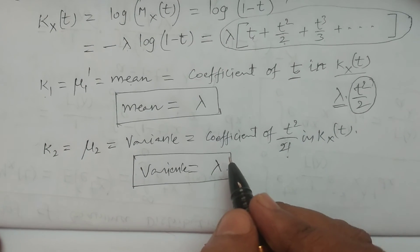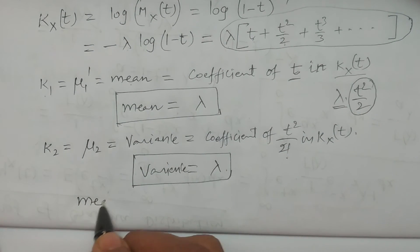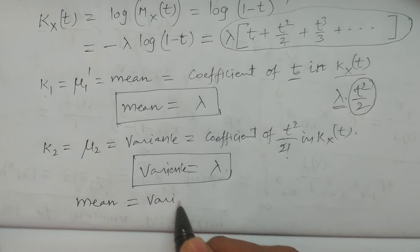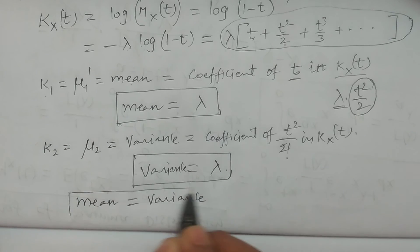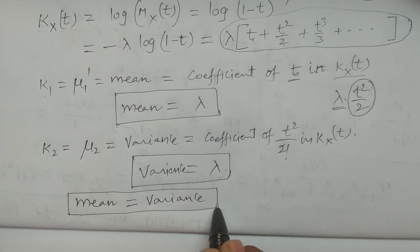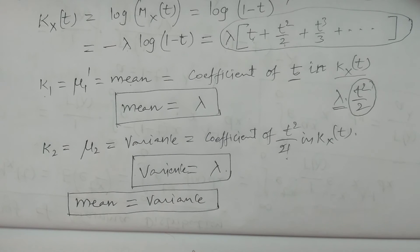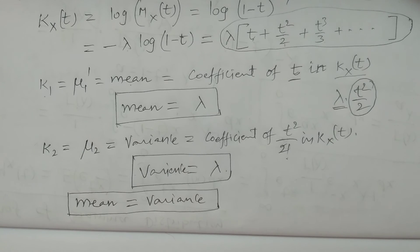Therefore, we can state an important property: mean equals variance for the gamma distribution. So one such continuous distribution for which mean equals variance is the gamma distribution. Of course, there is another discrete distribution for which mean equals variance — it is the Poisson distribution. So there are two distributions where mean equals variance: for discrete it is Poisson, and for continuous it is the gamma distribution.